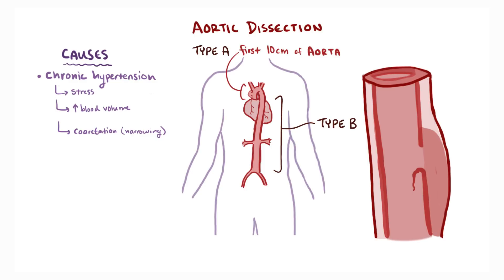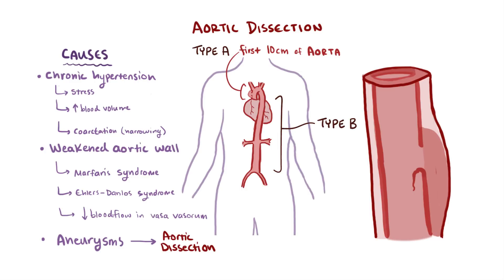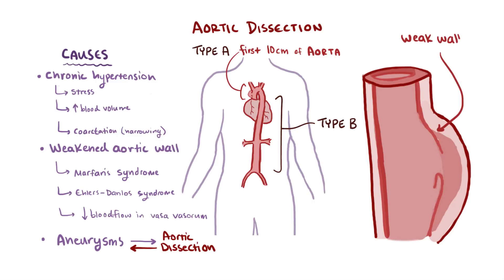In order for an aortic dissection to occur, an underlying condition usually has to exist that weakens the aorta's wall. Connective tissue disorders, like Marfan's and Ehlers-Danlos Syndrome, can cause a dissection, as well as decreased blood flow to the vasa vasorum. Aneurysms can also be a cause of aortic dissection, and an aortic dissection can in turn cause aneurysms because the dissection weakens the blood vessel wall.